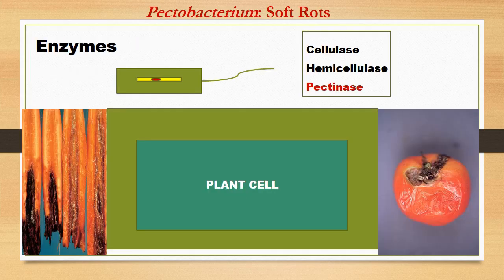The most common chemical weapons are enzymes. Many plant pathogens produce enzymes — for example, Pectobacterium, a plant pathogenic bacterium that causes soft rot disease. We can observe this when vegetables such as tomato, potato, bell pepper, carrot, or onion are left on a kitchen shelf for a long time: their skin wrinkles, liquid discharges with a very foul smell.